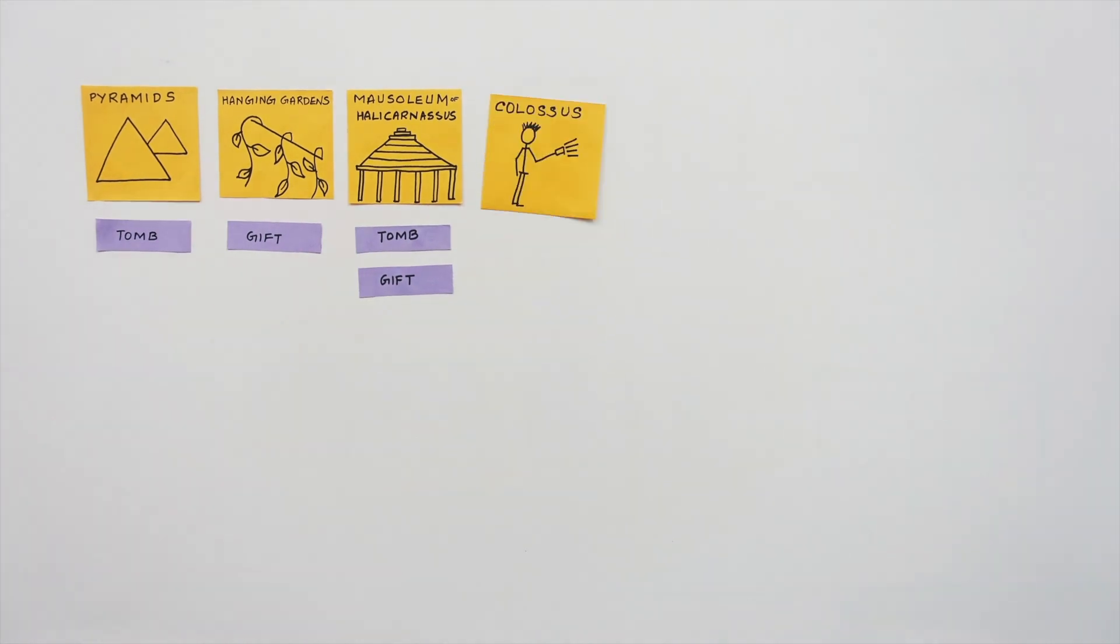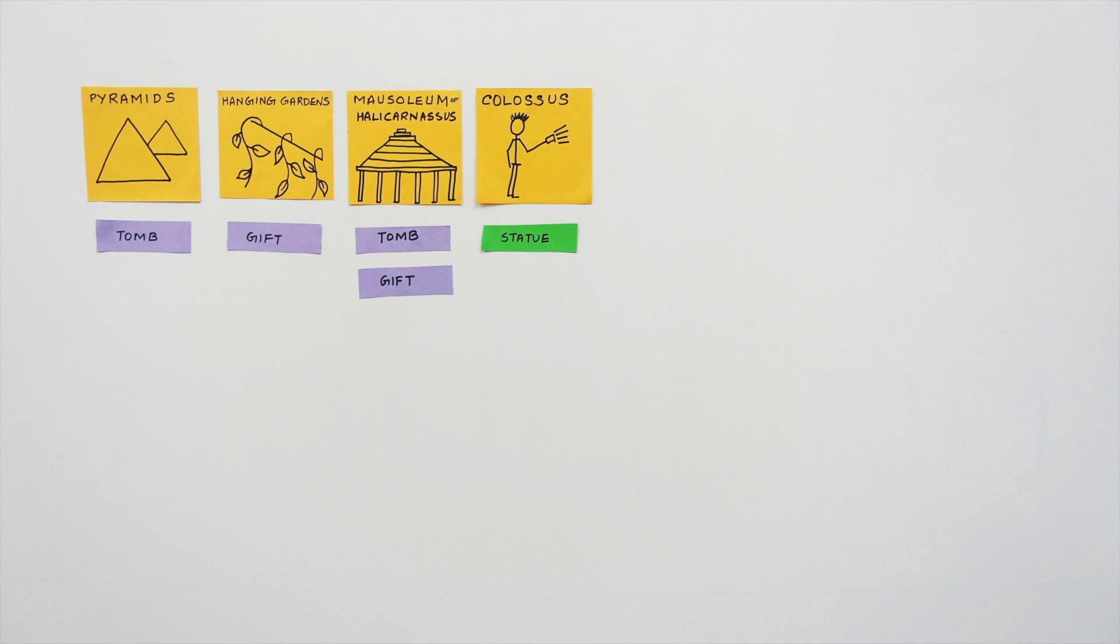The Colossus of Rhodes was a statue of the Greek god of the sun Helios, built by Chares in 280 BC. It's similar to the modern Statue of Liberty.